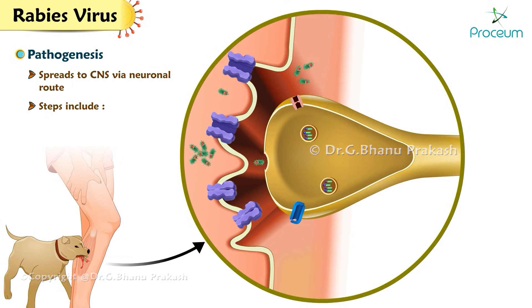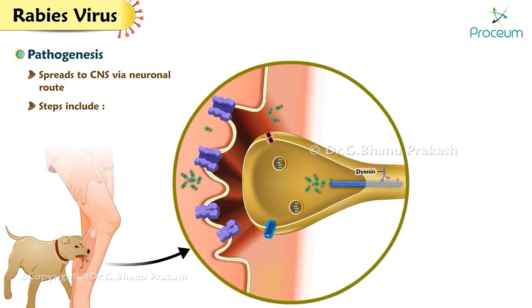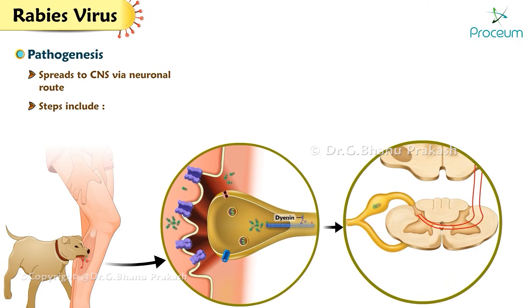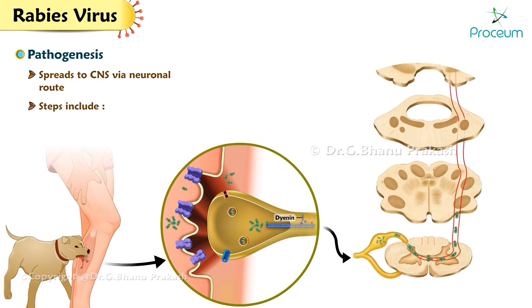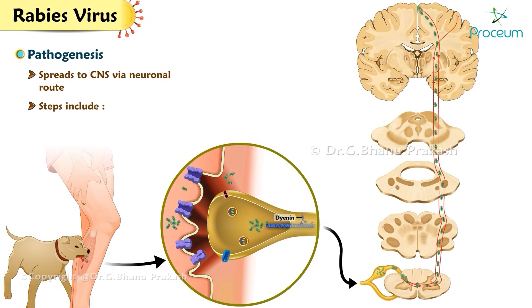The virus crosses the neuromuscular junction and enters the neuron, where it replicates. It then uses dynein motor protein found in the neuron cytoplasm to travel within axons up the peripheral nerves via retrograde transport. The virus replicates in motor neurons of the spinal cord and dorsal root ganglia, ascending to the brain, leading to infection of brain neurons.